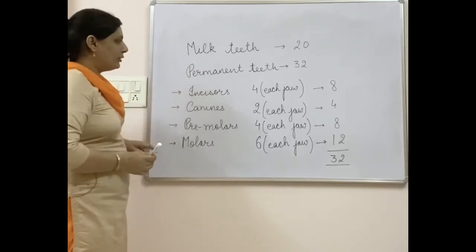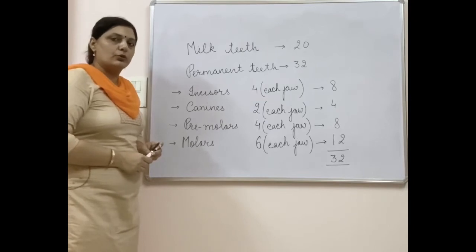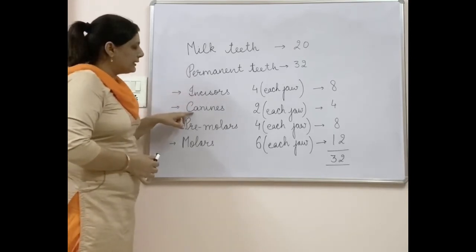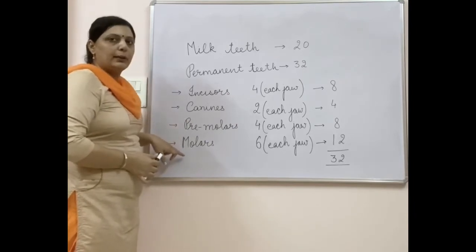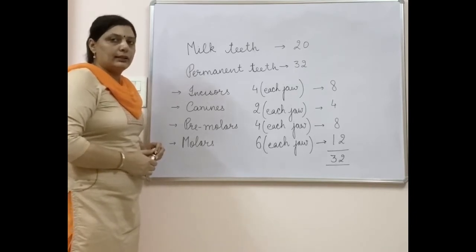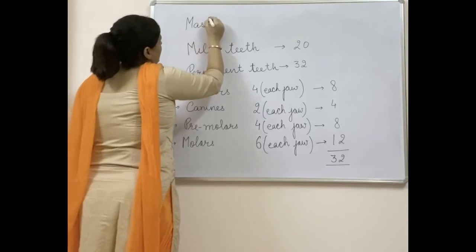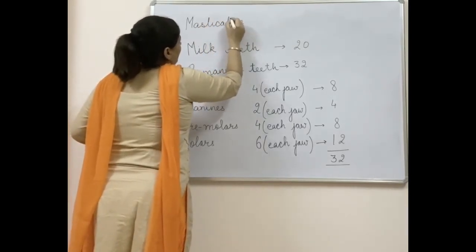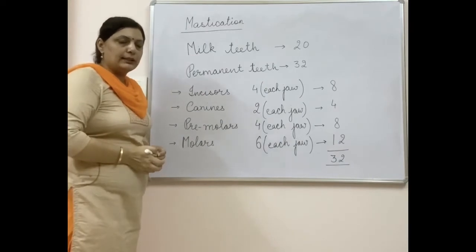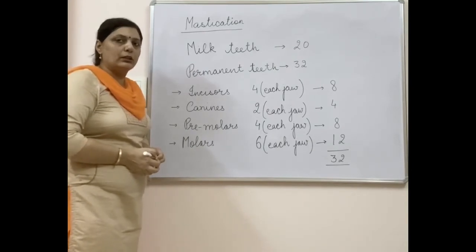The function of pre-molars and molars is chewing and grinding. All teeth have their own function and help in breakdown of food into smaller particles — incisors for biting and cutting, canines for tearing, and pre-molars and molars for chewing and grinding. The process of breaking down food by the teeth is called mastication, and through mastication food is mixed with saliva in the buccal cavity.